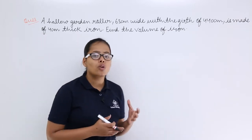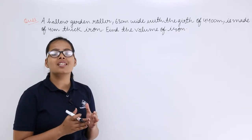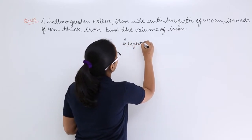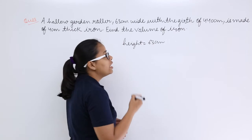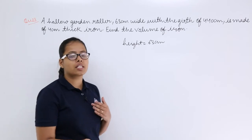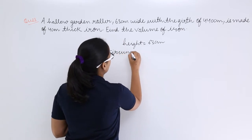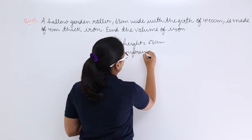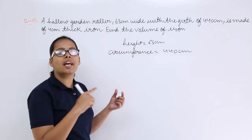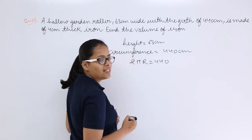Let's write down all the given information. The wideness of this roller means the height of this roller is 63 centimeter. You also know the girth. Girth is the circumference of one face — either the bottom face or top face. So the circumference is equal to 440 centimeter. This girth is the external girth, which means 2π times the external radius equals 440 centimeter.